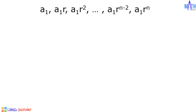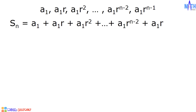Let us consider these terms of a finite geometric sequence: A sub 1, A sub 1 R, A sub 1 R squared, all the way to the second to the last term which is A sub 1 R raised to n minus 2, and the nth term A sub 1 R raised to n minus 1. Let us find the sum of all these terms. We can rewrite this as S sub n equals A sub 1 plus A sub 1 R plus A sub 1 R squared, all the way to A sub 1 R raised to n minus 2 plus A sub 1 R raised to n minus 1.